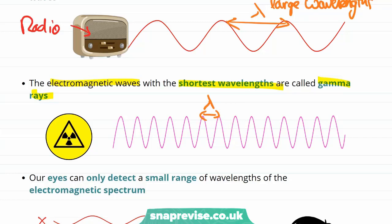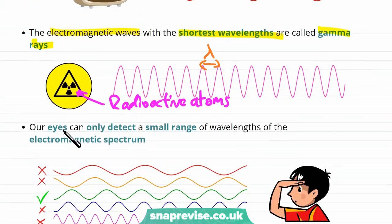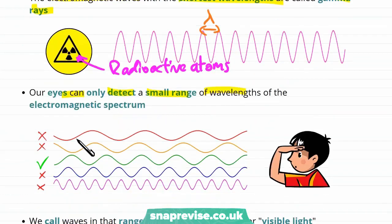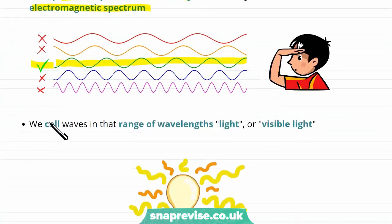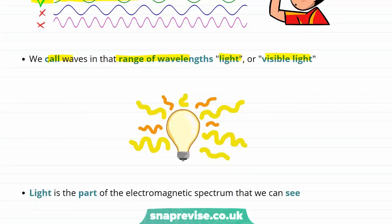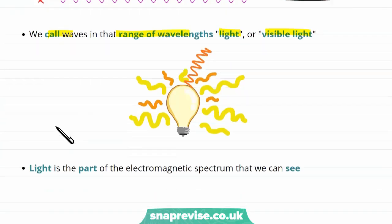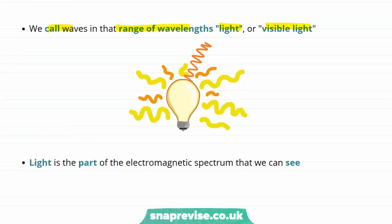Our eyes can only detect a small range of wavelengths of the electromagnetic spectrum — only some frequencies in the middle of the spectrum that we can actually see. We call these waves visible light. A light bulb is a source of electromagnetic waves — it's just that they're electromagnetic waves we're very familiar with. What we commonly call light is simply the part of the electromagnetic spectrum that we can see.